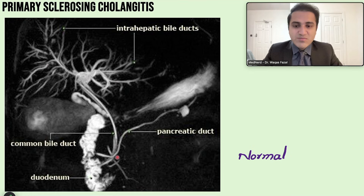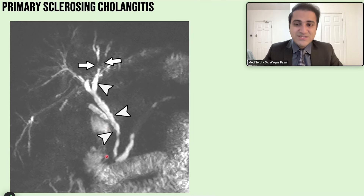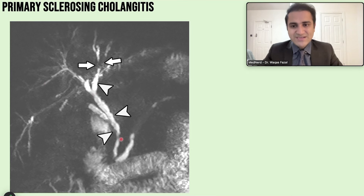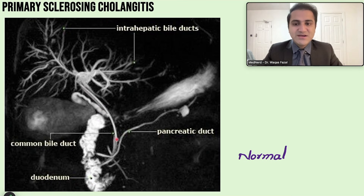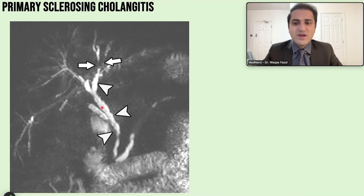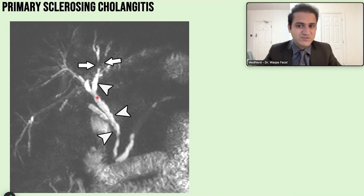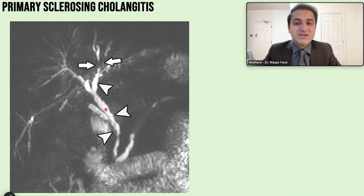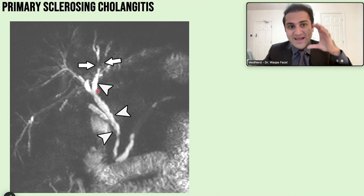A normal MRCP shows a beautiful, clear duct pattern with both intrahepatic and extrahepatic ducts well defined. In a PSC patient, the intrahepatic ducts cannot be appreciated properly due to damage. The extrahepatic ducts show a bead-like stricture pattern — some areas dilated, some constricted — from fibrosis. This is the hallmark MRCP appearance of PSC.